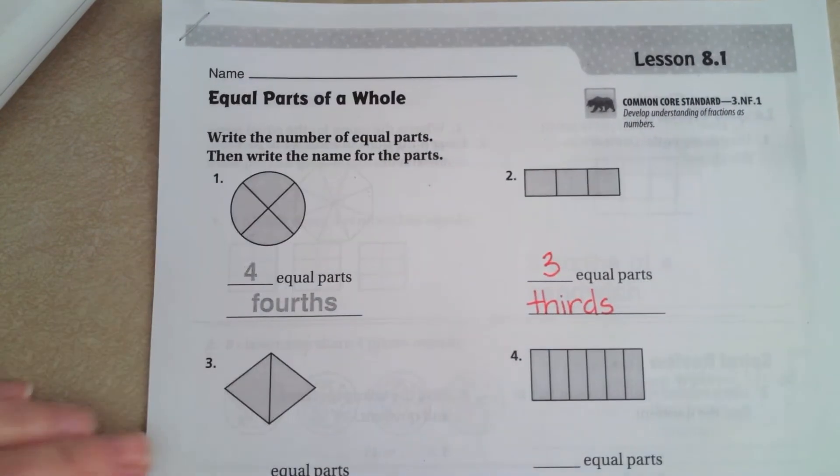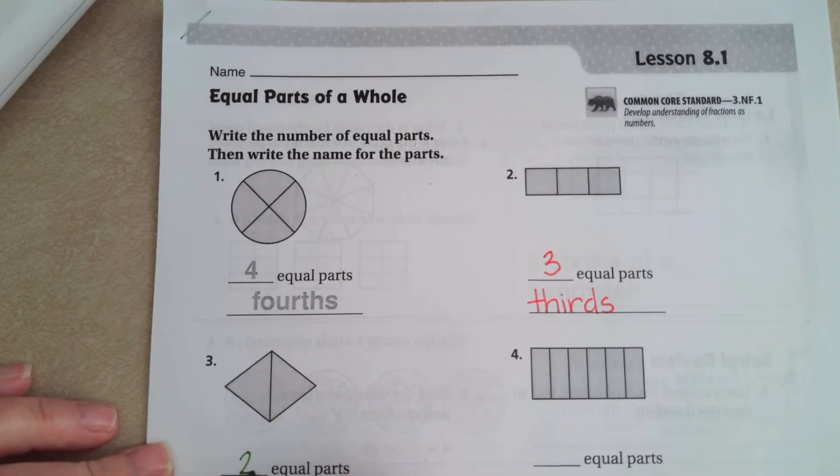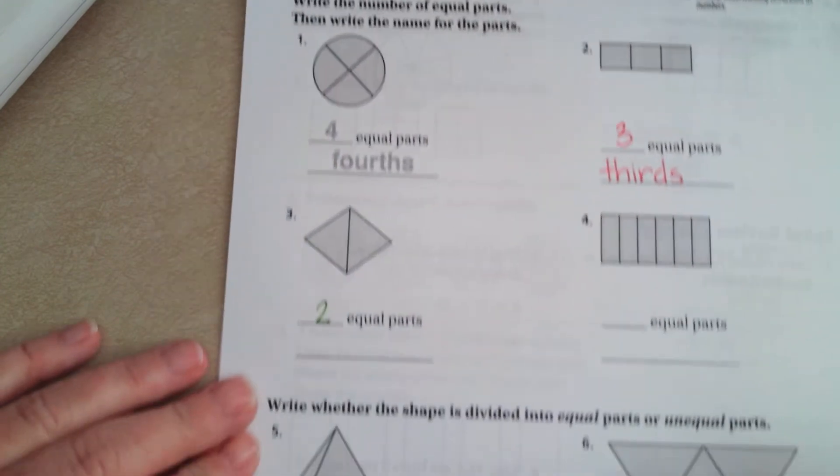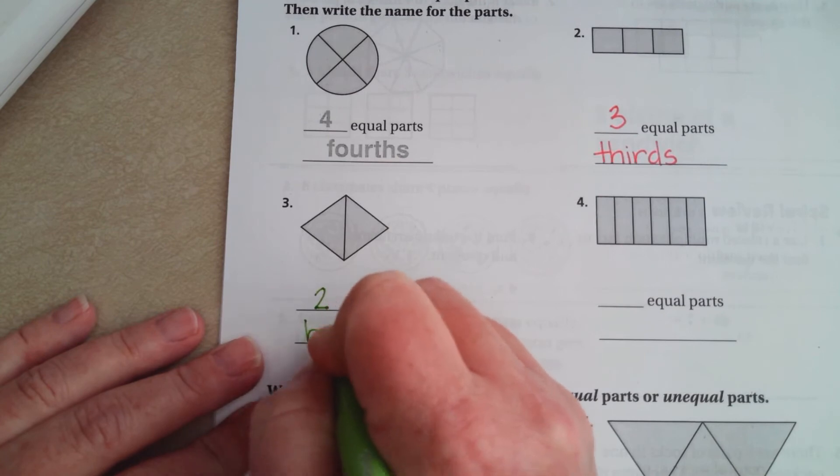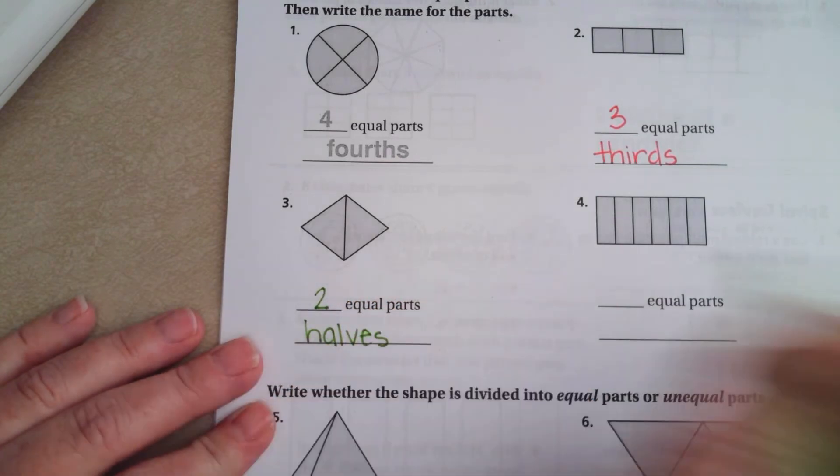When you have 1, 2 equal parts, those are just halves. Like, you cut a sandwich in half.